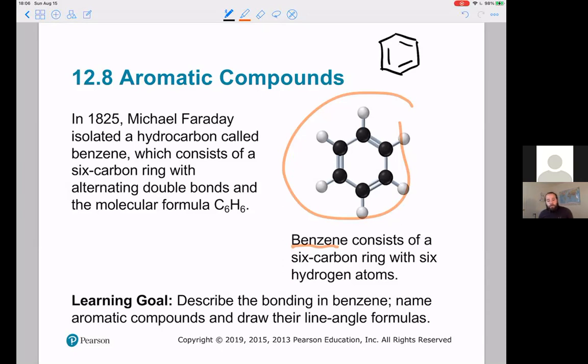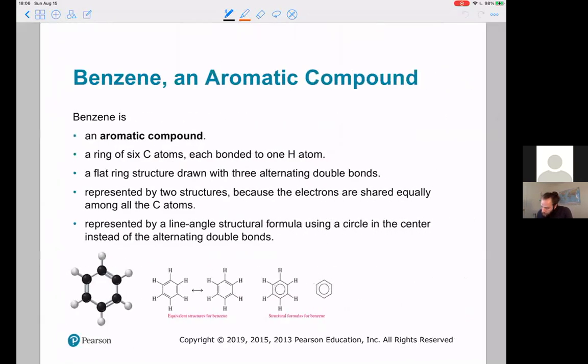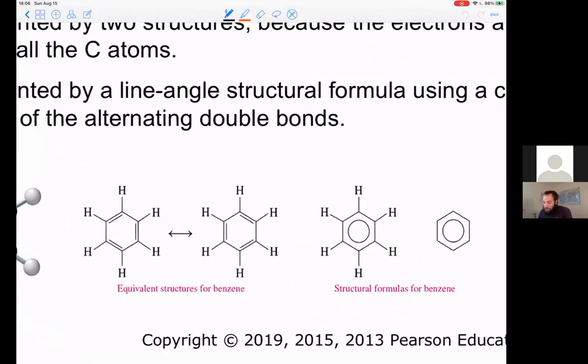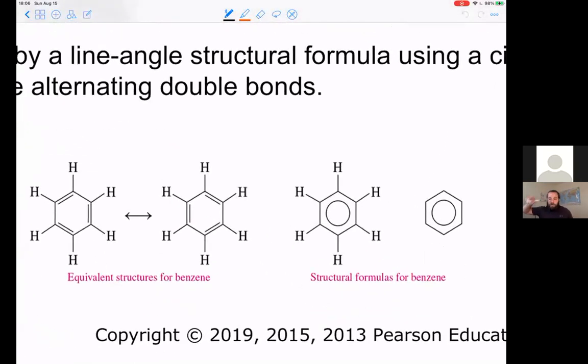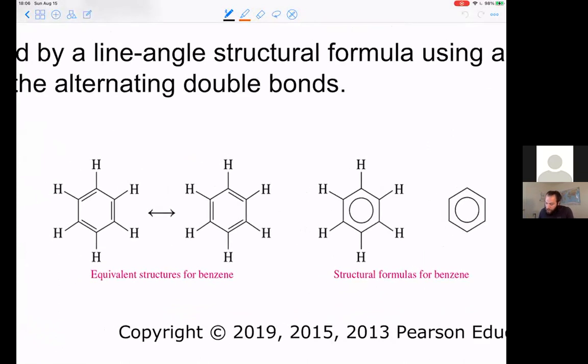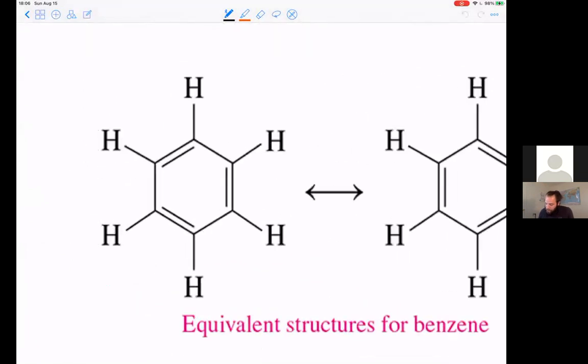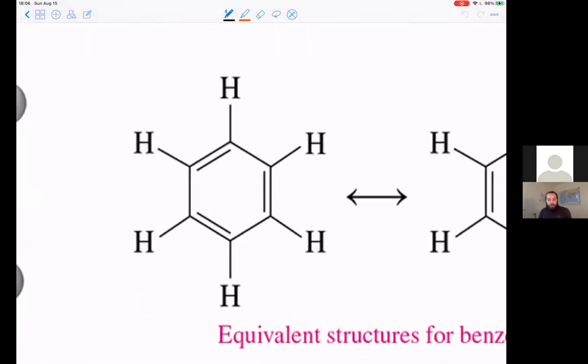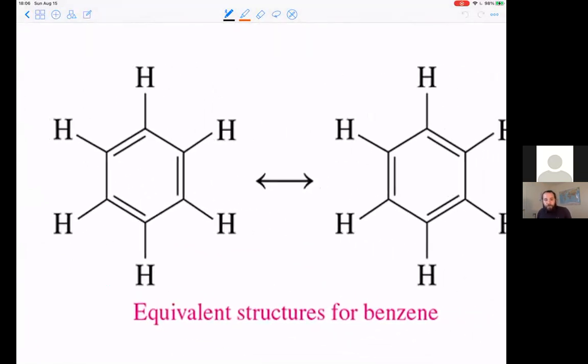It has very unique properties in that it is super duper stable, way more stable than other hydrocarbons, and that perplexed scientists for a long time. It turns out that these double bonds can actually jump positions—they can move around in this sort of a ring.